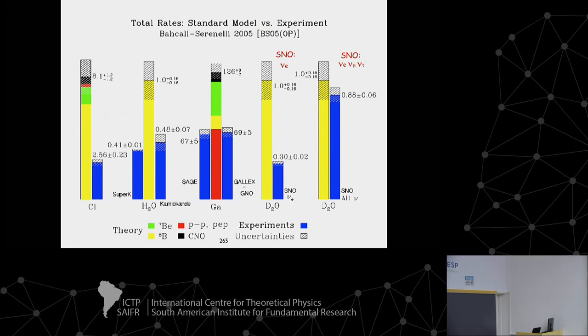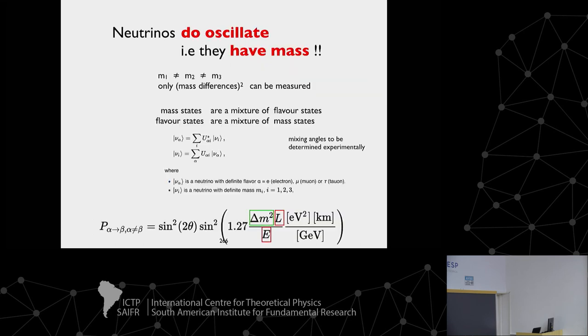This is a summary of various neutrino experiments that found a discrepancy between measurements and expectations. With SNO, the first interaction showed the deficit as before, but the second — where all neutrino flavors could participate — showed the neutrino flux as expected by the solar model. So neutrinos do oscillate, and that means they have mass.